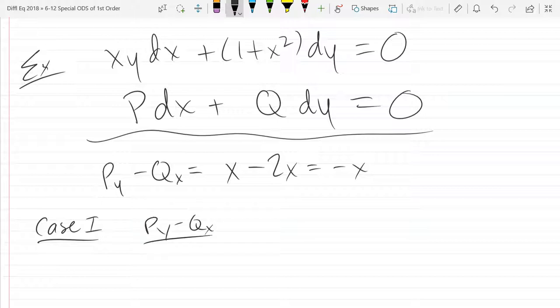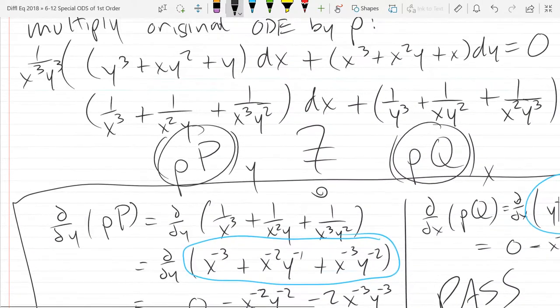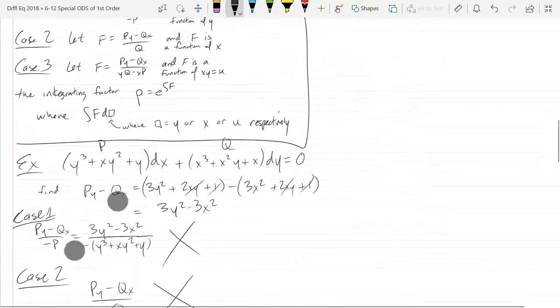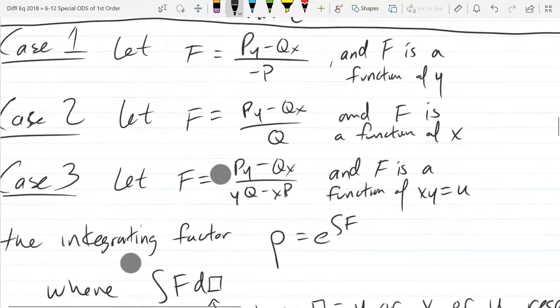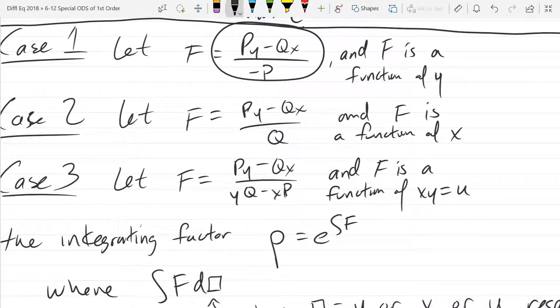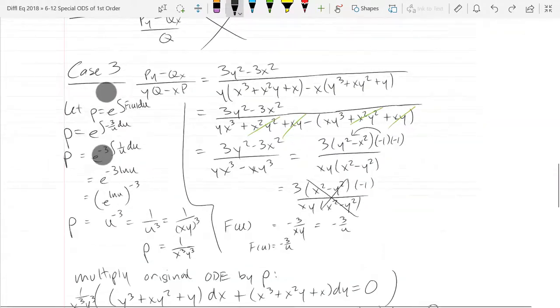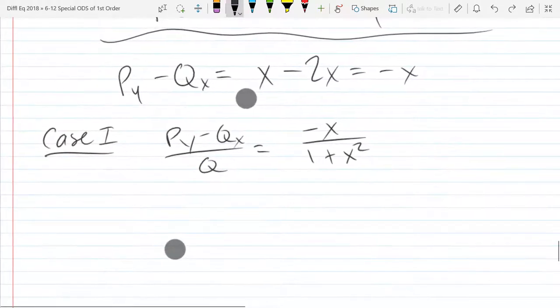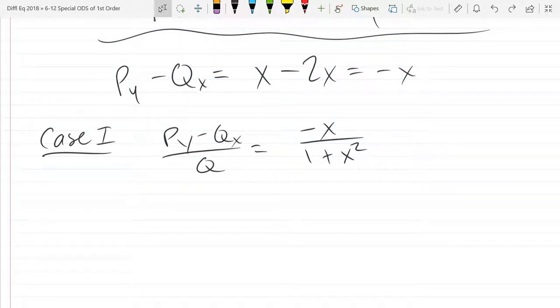Like actually write case one, py minus qx over q. So that's negative x over one plus x squared. I forgot real quick, when we do the py minus qx, what are we trying to check? The only one variable comes out? Yeah, so you generally won't. I mean, we happen to get just a function of x, but there's three possibilities. Oh, I see. Okay. So if this, what I circled, is a function of y only, we have case one. I don't think we're going to have a function of y only because there's x in there.